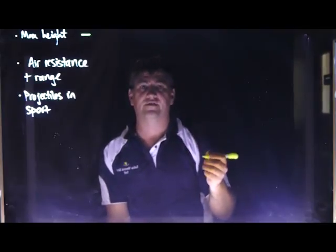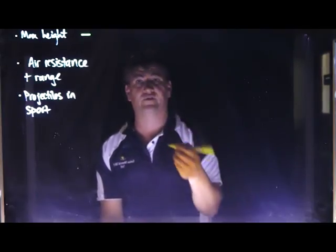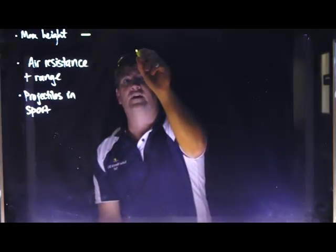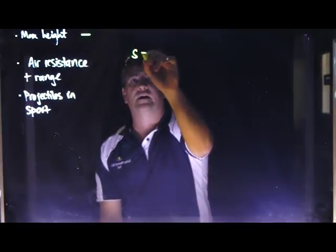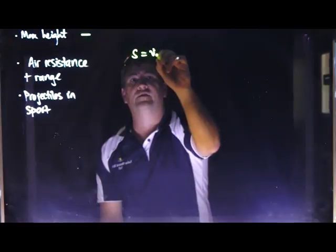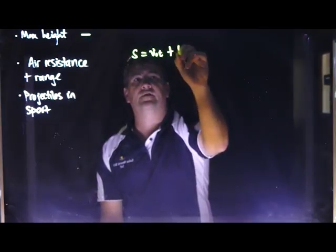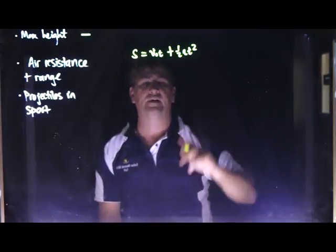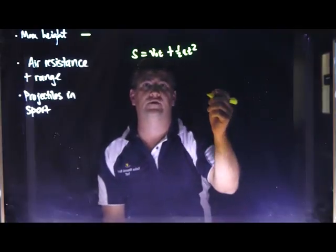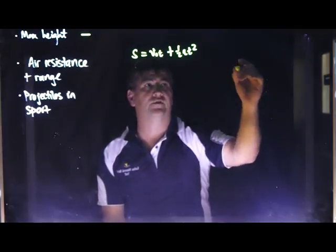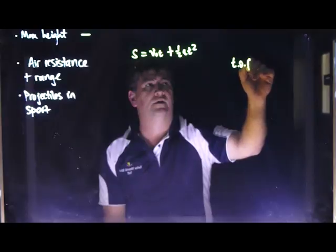So the maximum height of a projectile is obviously going to be something to do with some sort of distance. In this case you've seen this one, s equals v naught t plus half a t squared. And what you did was you probably used this one or a version similar to find out the time of flight.